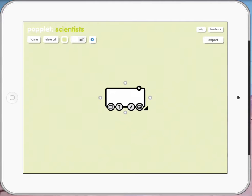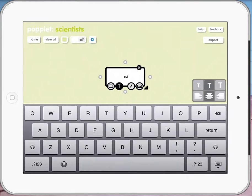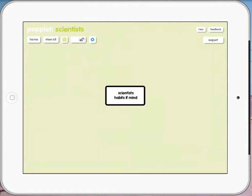So I basically touch on that Poplet. It gives me some options: the border, put in some text, drawer, or a picture. I'm going to just put in some text here and put our heading. So scientists. And I might put down the bottom here, habits of mind. And then I just touch on the side of the page to get rid of it. When I touch on that again, it gives me some options.